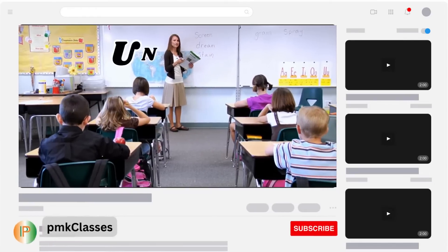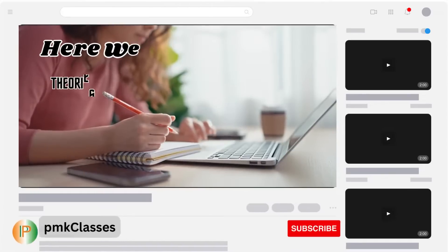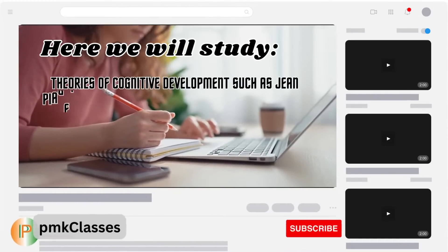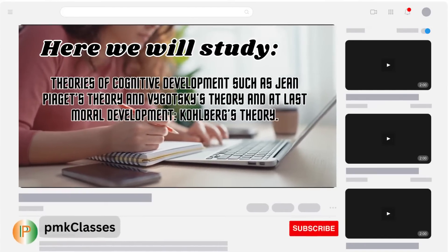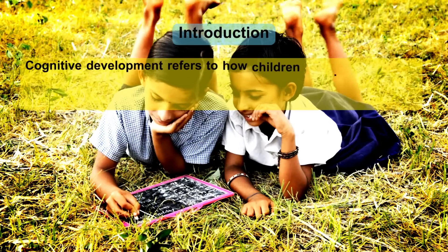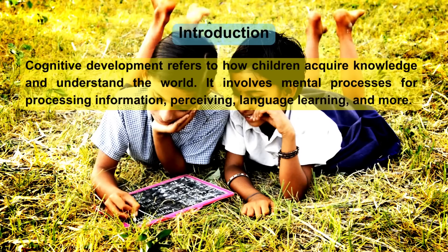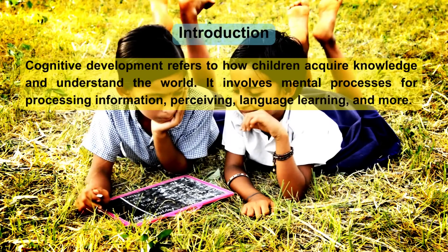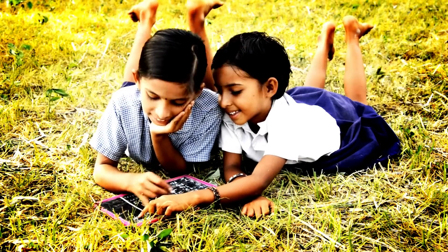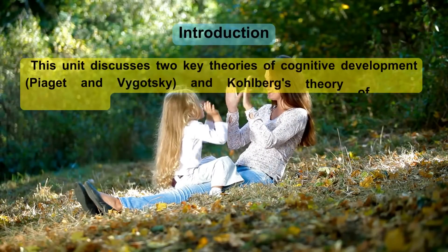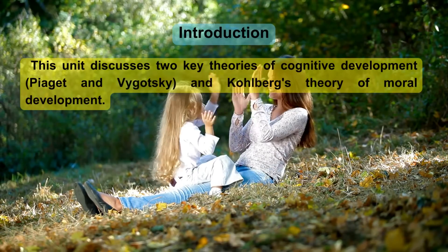In this video we will understand Unit 9: Cognitive and Moral Development. We will study theories of cognitive development such as Jean Piaget's theory and Vygotsky's theory, and moral development through Kohlberg's theory. Cognitive development refers to how children acquire knowledge and understand the world. It involves mental processes for processing information, perceiving, language learning, and more.